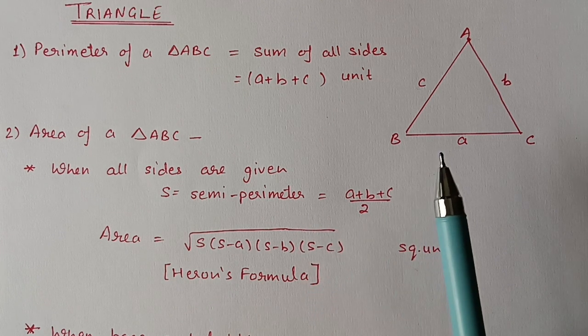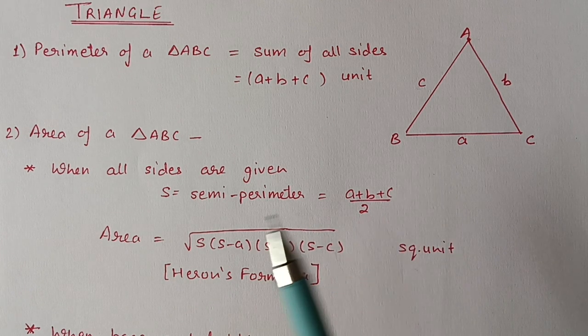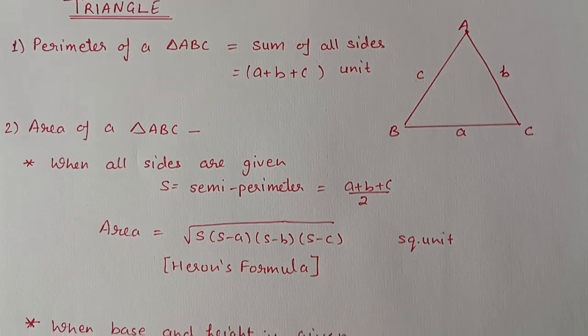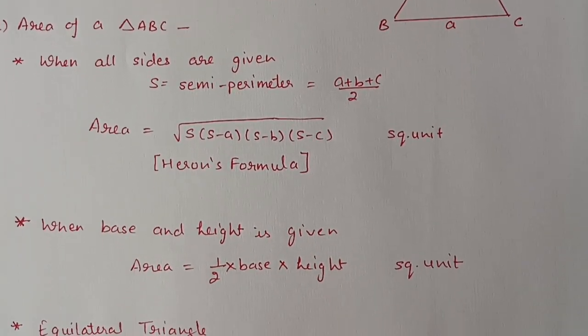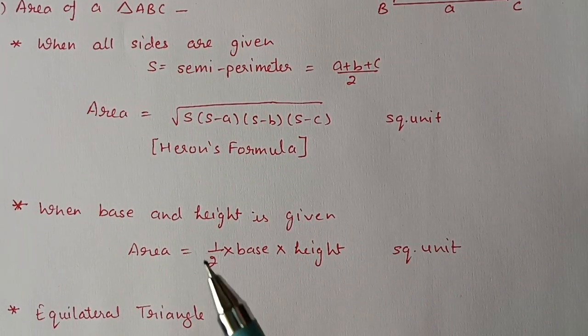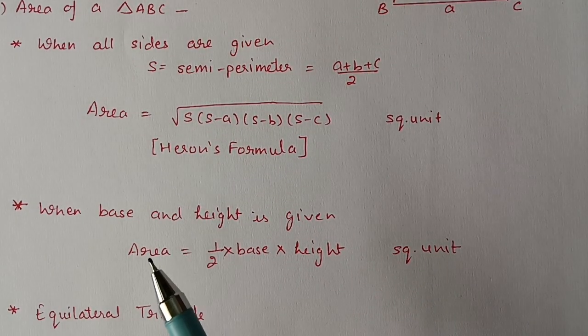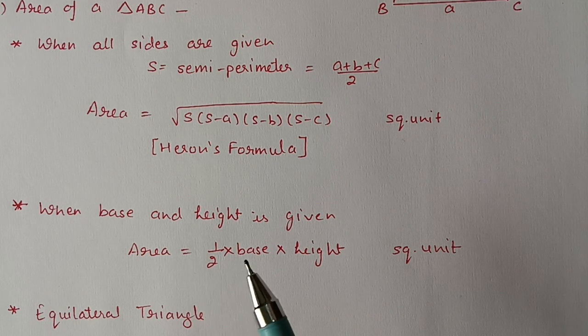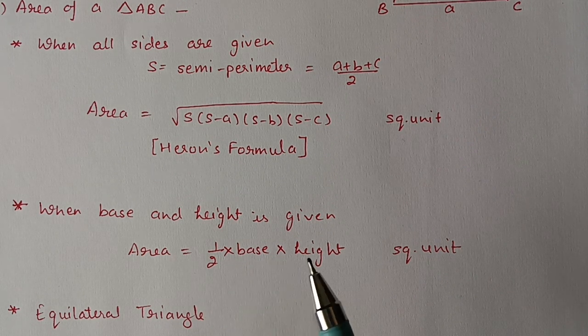The second case is when base and height are given. In that case you can use the formula: area is equal to half times base times height, which you have learned in the earlier classes.